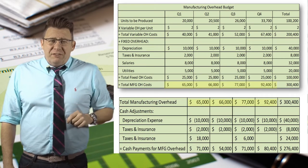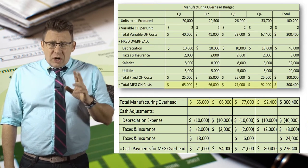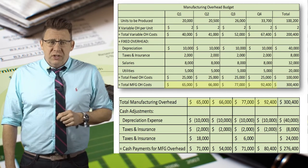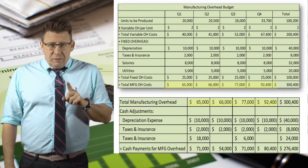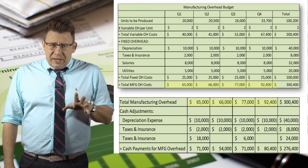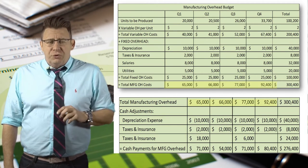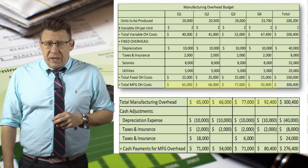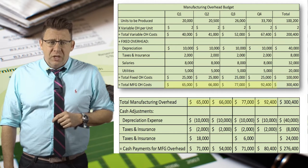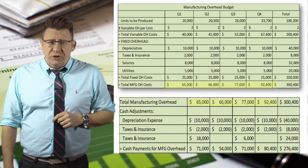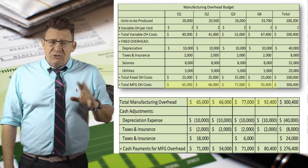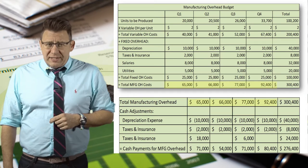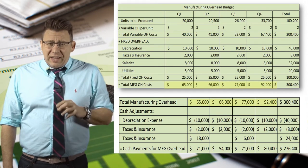The amount paid for manufacturing overhead is a little more complicated than materials and labor, because not all overhead costs are cash expenditures. Additionally, using the matching principle, we spread prepaid taxes and insurance evenly through the year. But for cash disbursement purposes, we need to know in which quarter the payments will be made. So we start with the total cost of manufacturing overhead from the manufacturing overhead budget. Then I've added back the amount of depreciation expense, since this is not a cash expenditure.